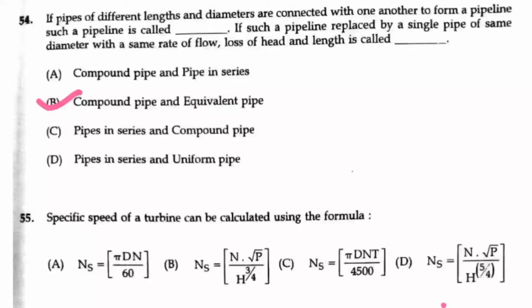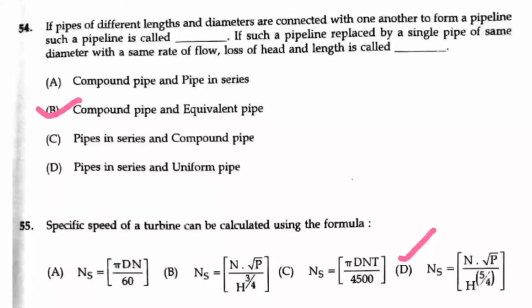Question number 55. Specific speed of a turbine can be calculated using the formula Ns equals N root P by H power 5 by 4. So this formula we will be using in the Pelton wheel turbine also. So option D is the answer here.